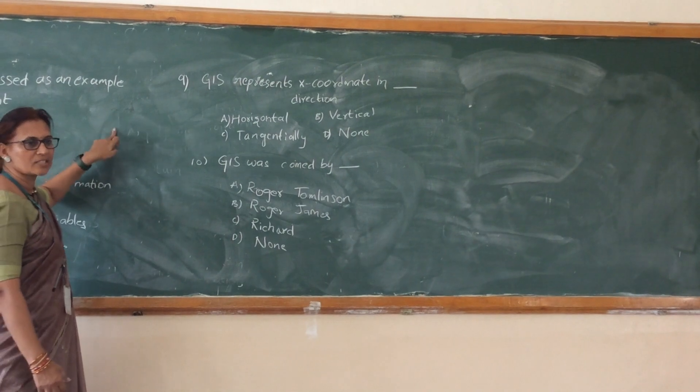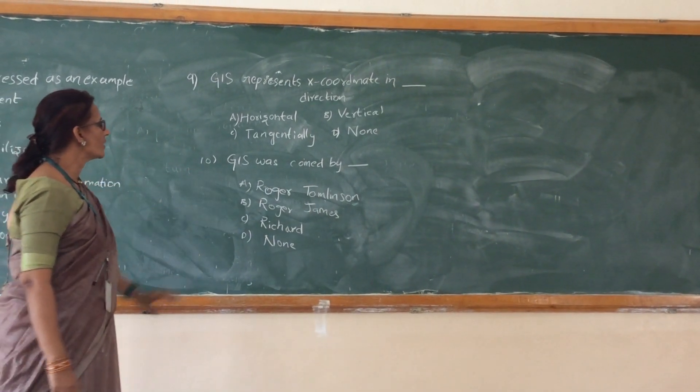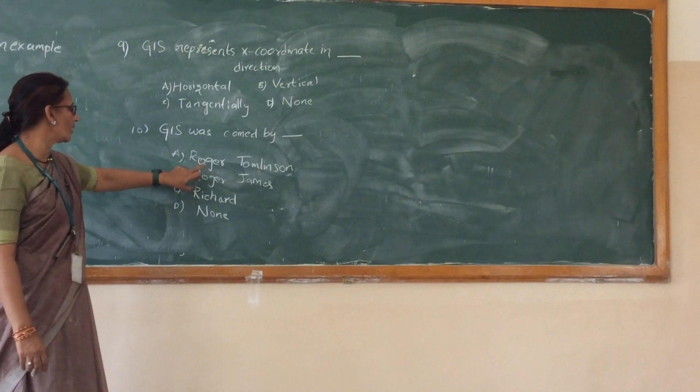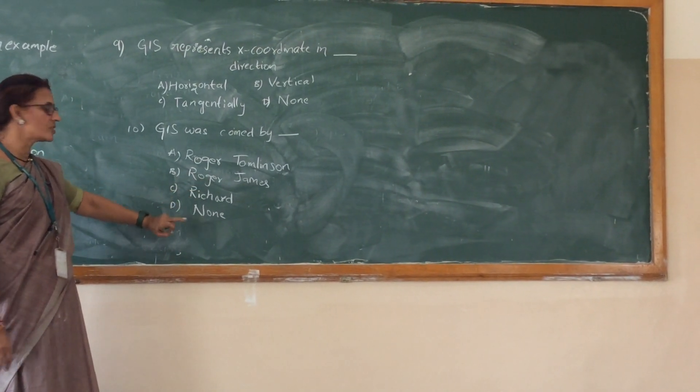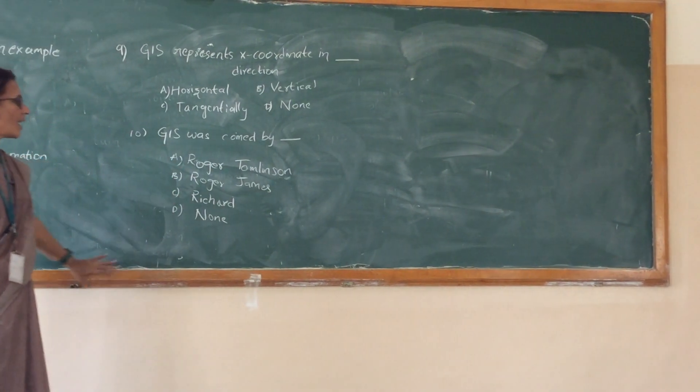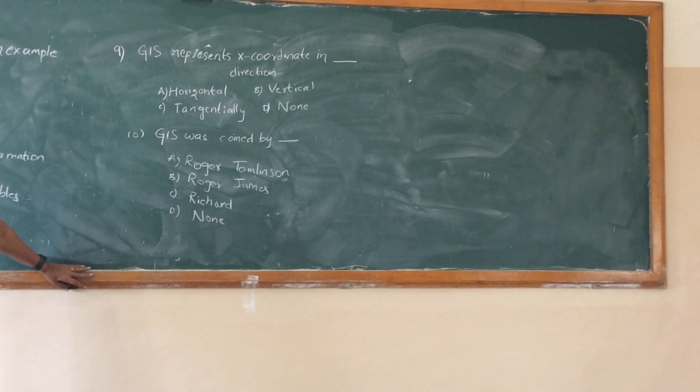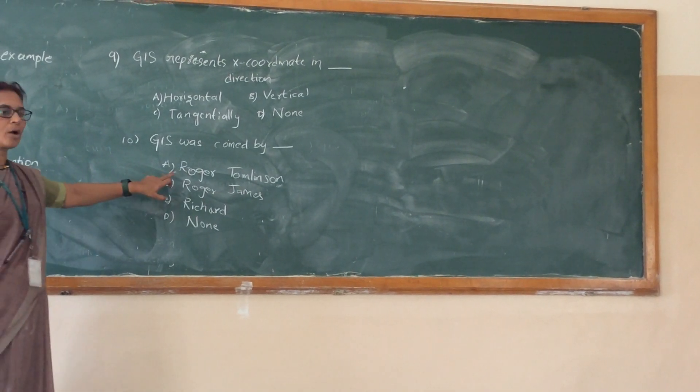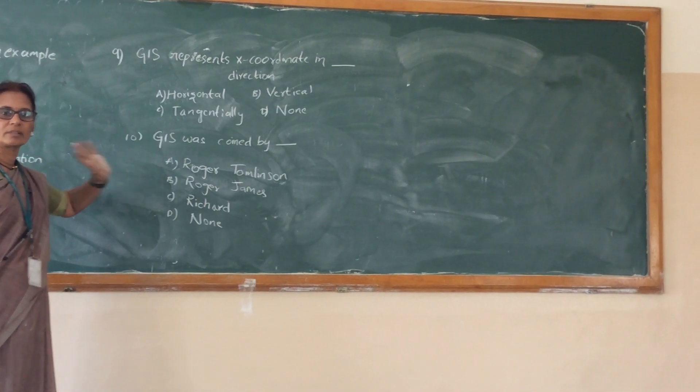The GIS was coined by Roger Townsend or Robert James, Richard and among these three, who made it as a GIS? Who is the inventor? Roger Townsend is the inventor. Thank you.